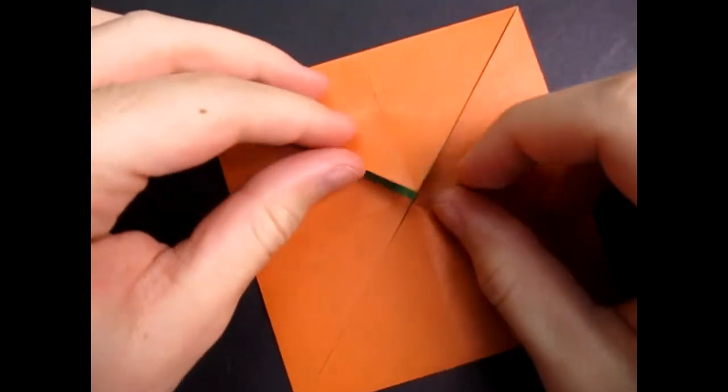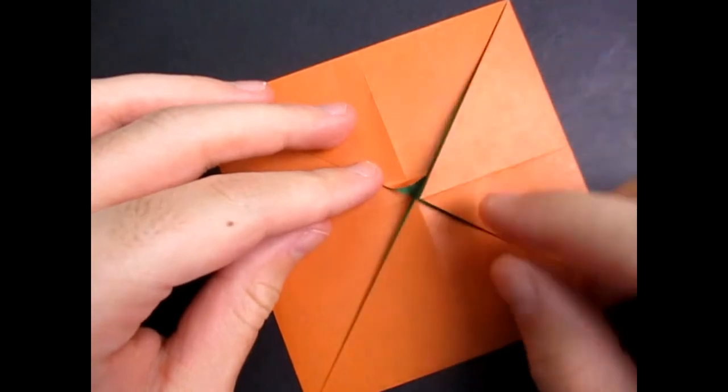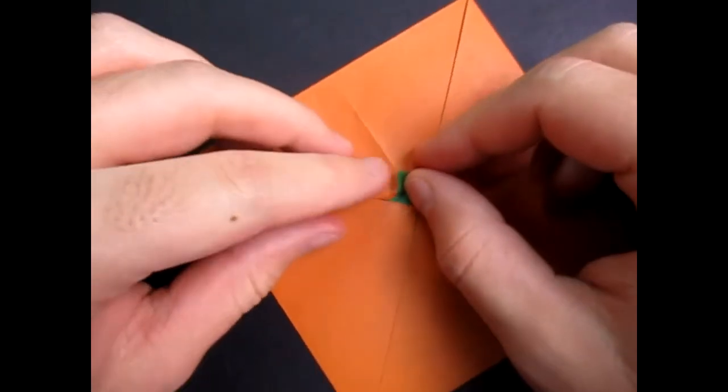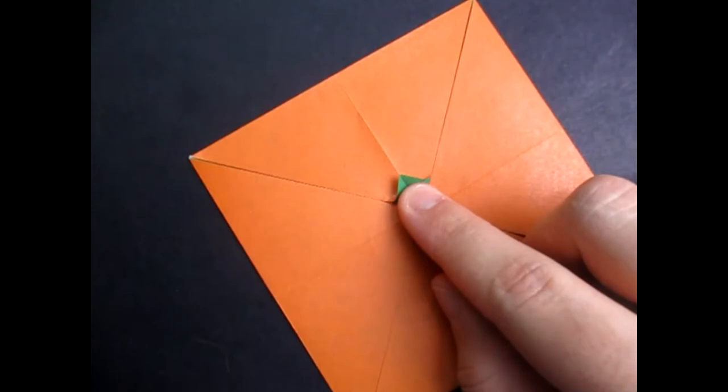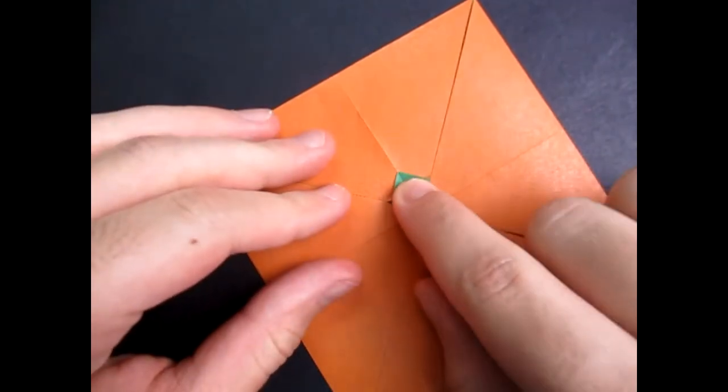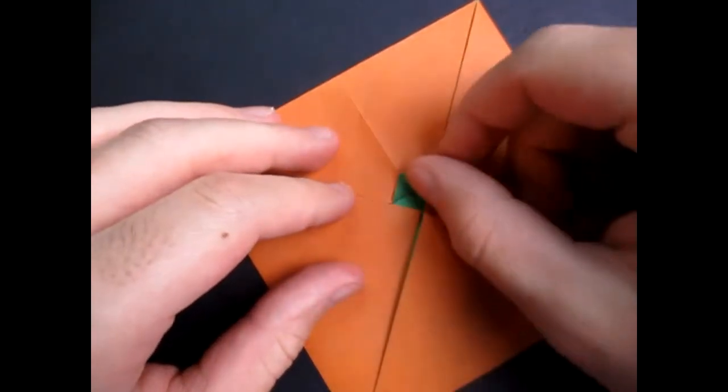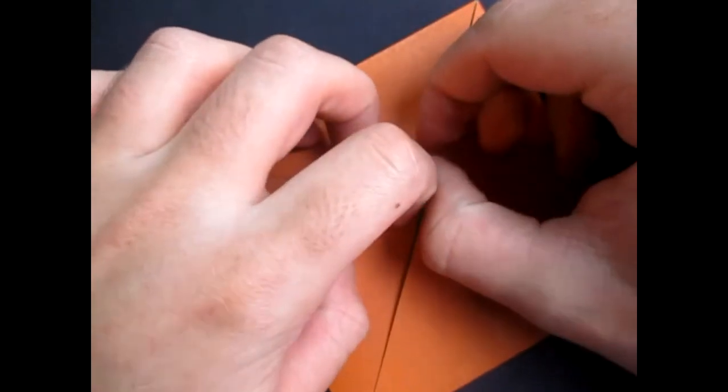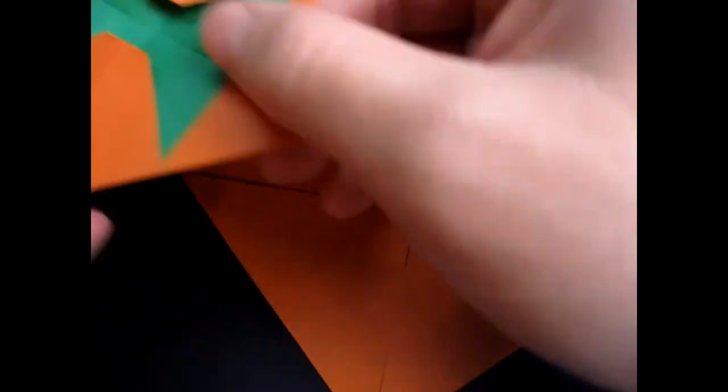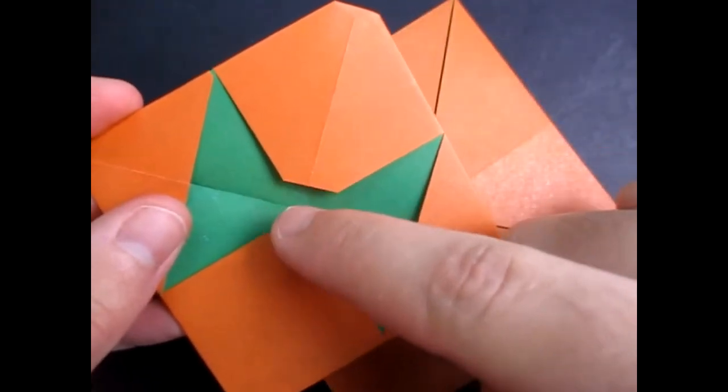Okay, so now what we're going to do is we're going to take this flap here and we're going to fold it up how much? Well, I say fold it up about a finger's width. So yeah, about like that. This middle part is going to be this middle part of the bowtie right here.